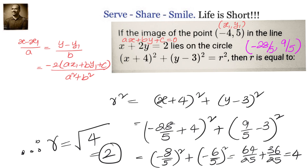The formula is: if x1 comma y1 is the point and we want to know its image in the line ax plus by plus c equals to 0, then x minus x1 by a equals to y minus y1 by b equals to minus 2 into ax1 plus by1 plus c divided by a square plus b square, where x comma y are the image coordinates. We applied this formula and calculated the image as minus 28 by 5 comma 9 by 5, substituted that into the given circle, got r square equals to 4, and therefore r equals to 2.